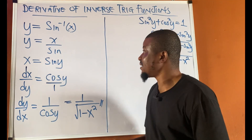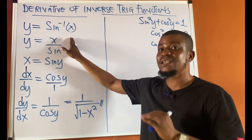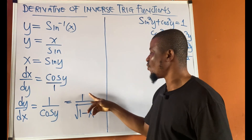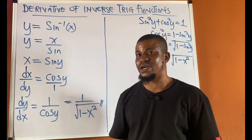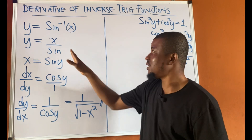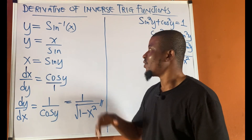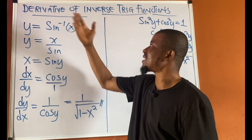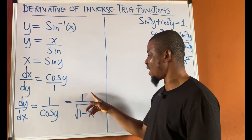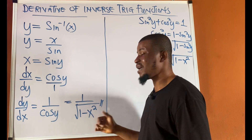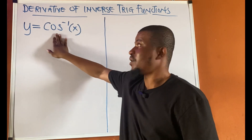So directly, if you are given y equal to sine inverse of x, its derivative is simply 1 upon root of 1 minus x squared. You don't need to go through this full derivation every time — whenever you see sine inverse of x, its derivative is 1 upon root 1 minus x squared.